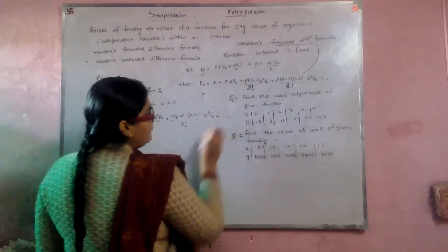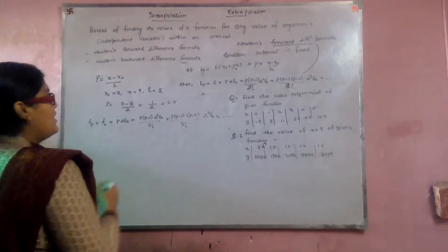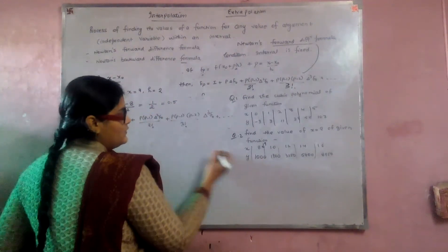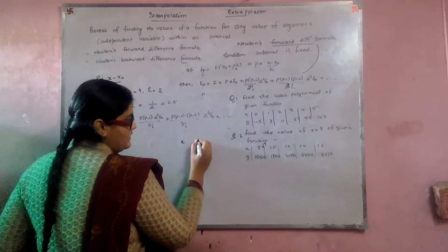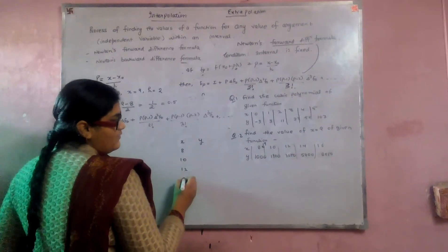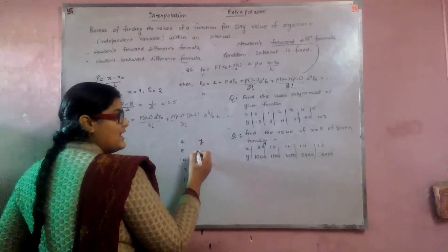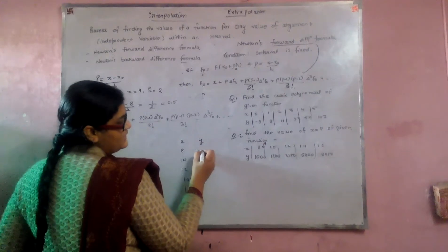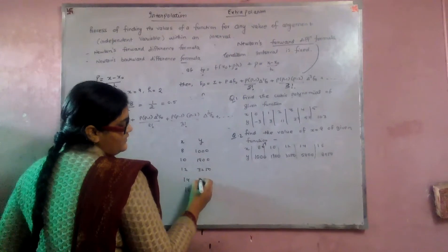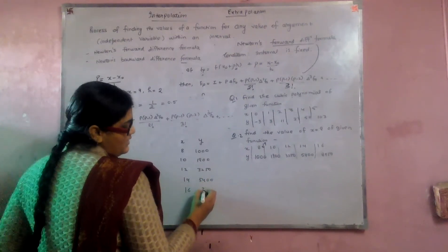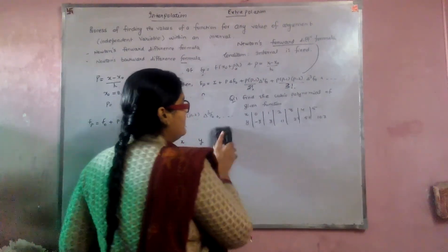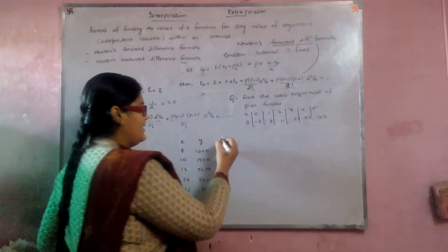To find these values, we make Newton's forward difference table. The values of x are 8, 10, 12, 14, 16 and the corresponding values of y are 1000, 1900, 3250, 5400, and 8950. We now compute the forward differences column by column.